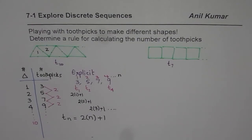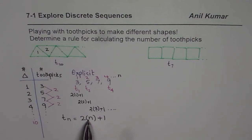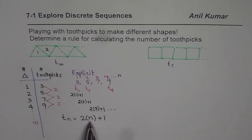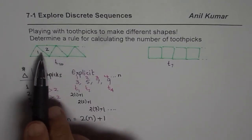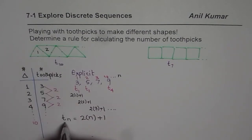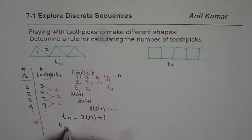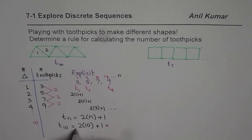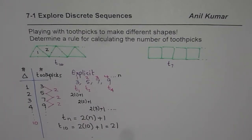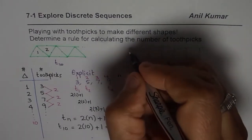So that is how you can develop and get your formula. When we are multiplying by a number and adding one, that number is the number of triangles. So when we say how many toothpicks are required for making ten triangles, we substitute ten here. So T10 will be two times ten plus one. That gives us the answer. This may look simple but it gives you a very good concept.